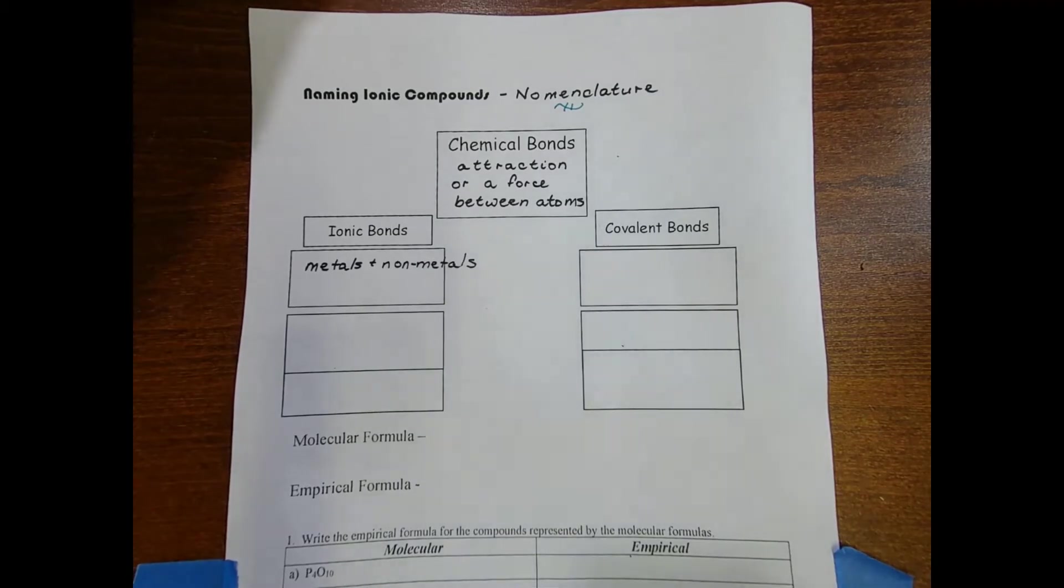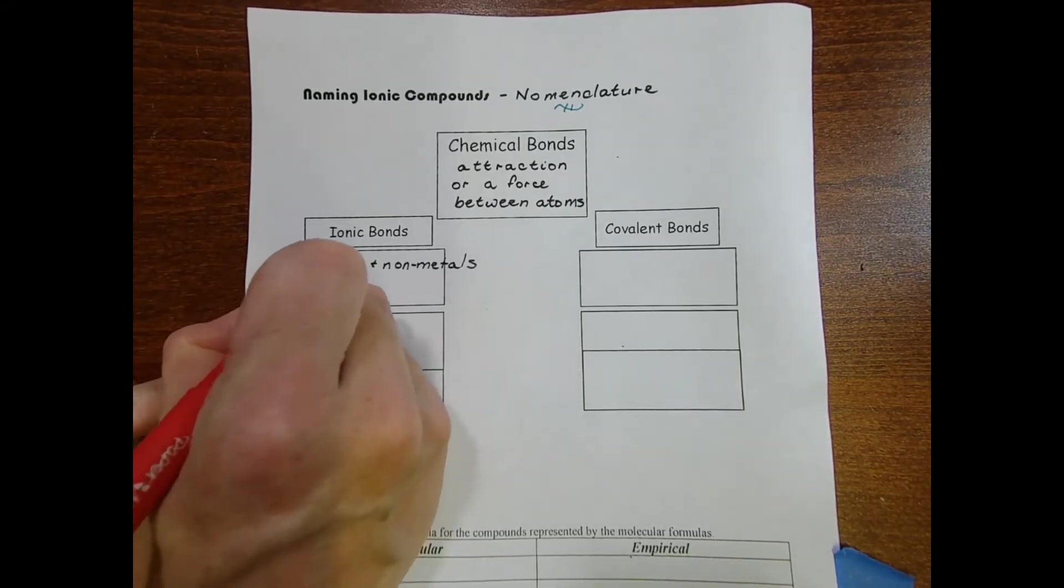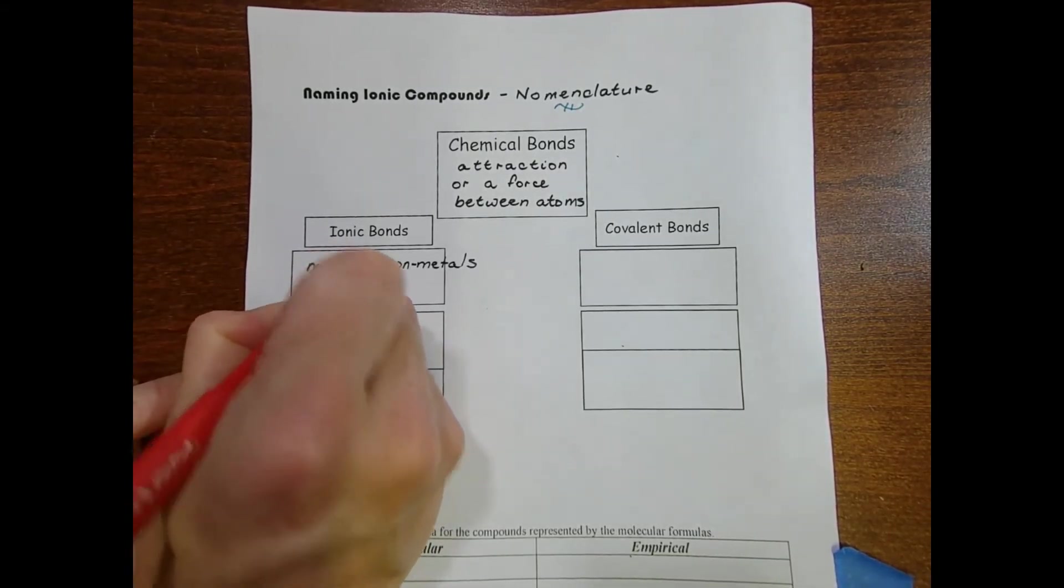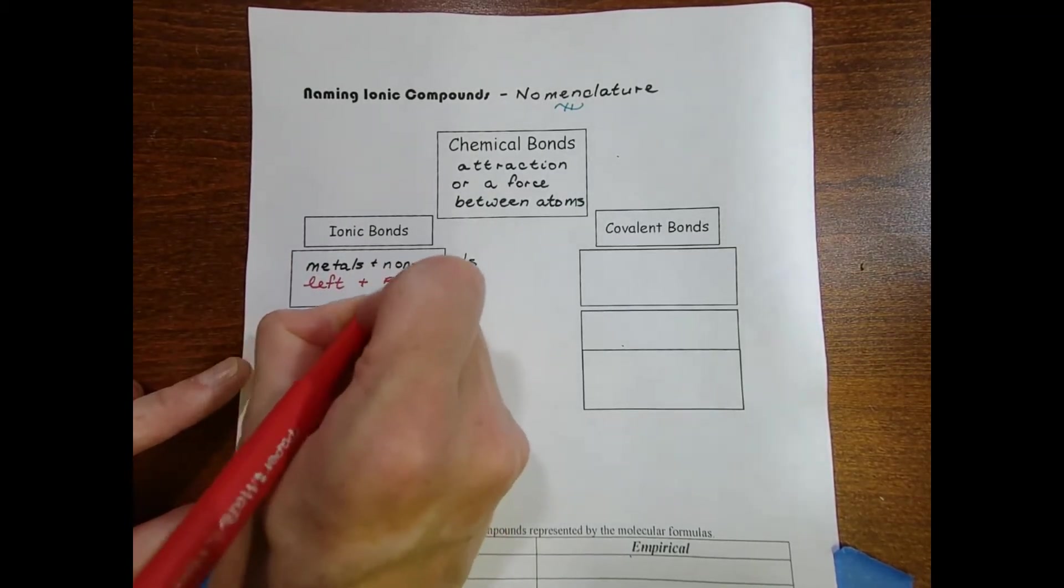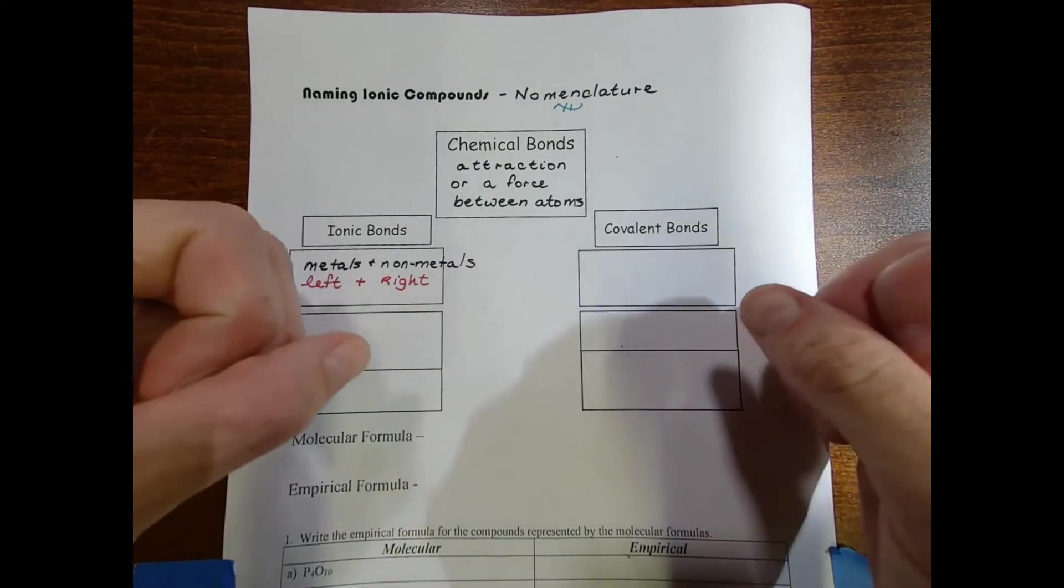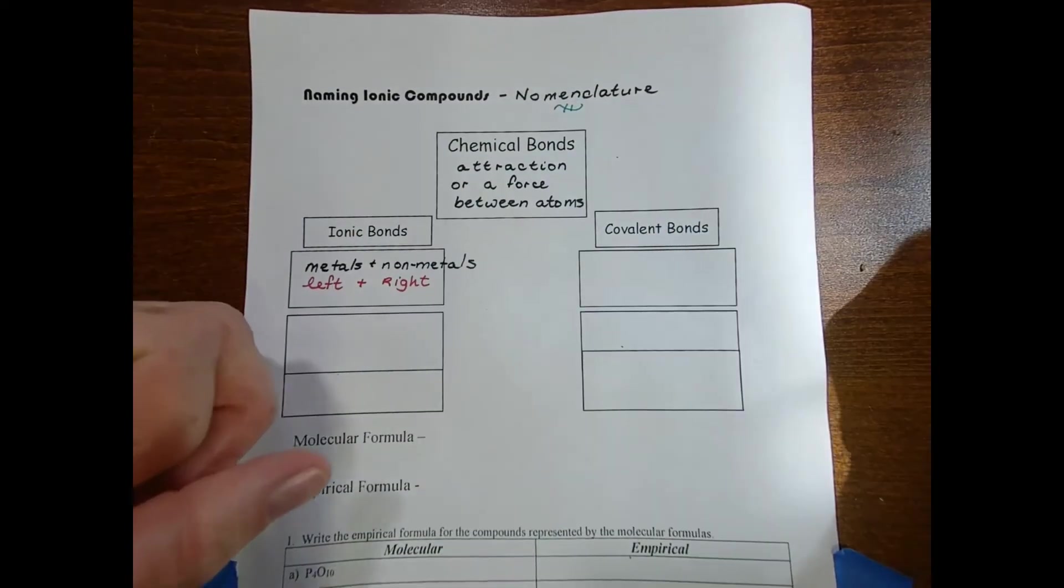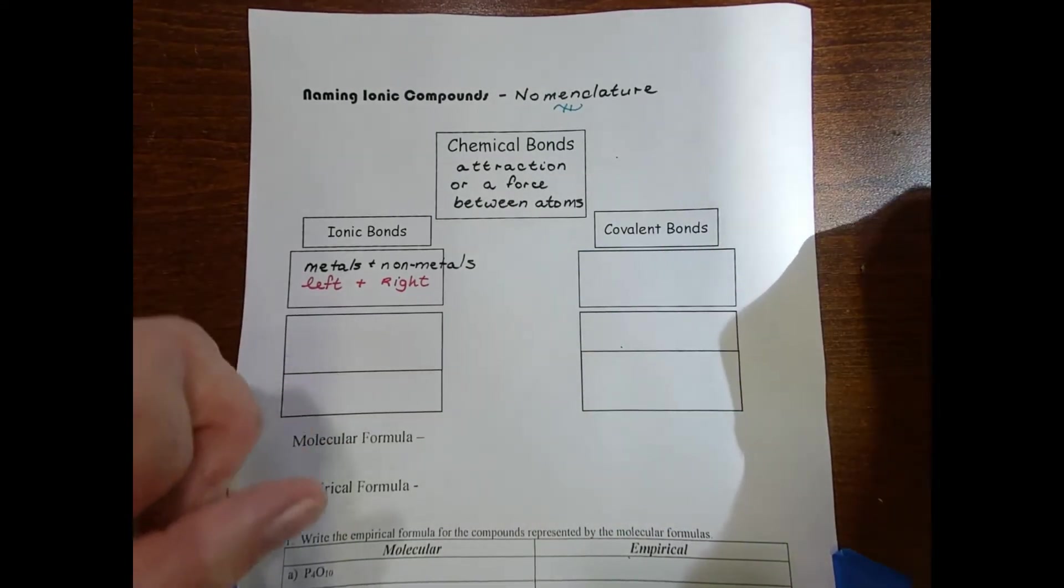How do you quickly identify something as being ionic? You're going to look at the periodic table. Your metals are to the left of the staircase and your nonmetals are to the right of the staircase. I always like to think of ionic bonds as coming from elements that are on opposite sides of the periodic table, almost like different sides of the track.